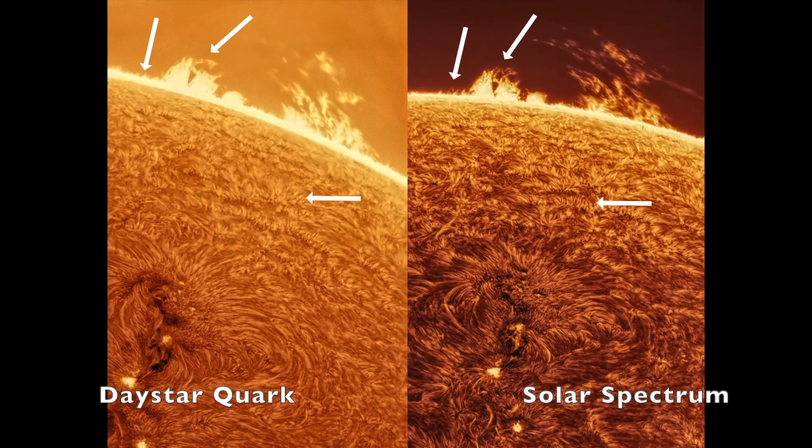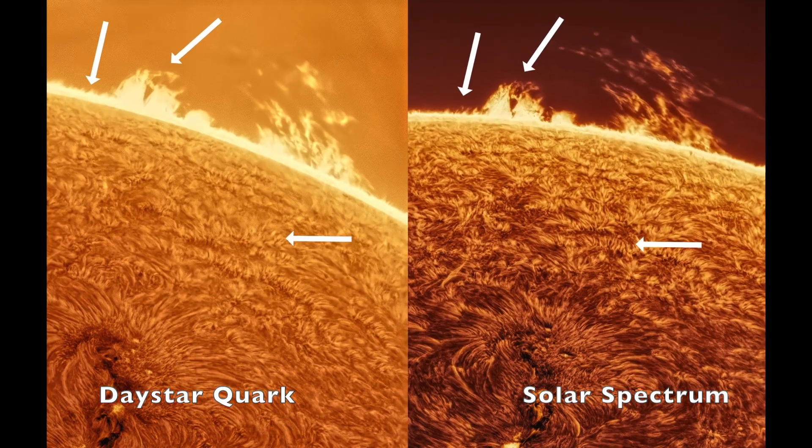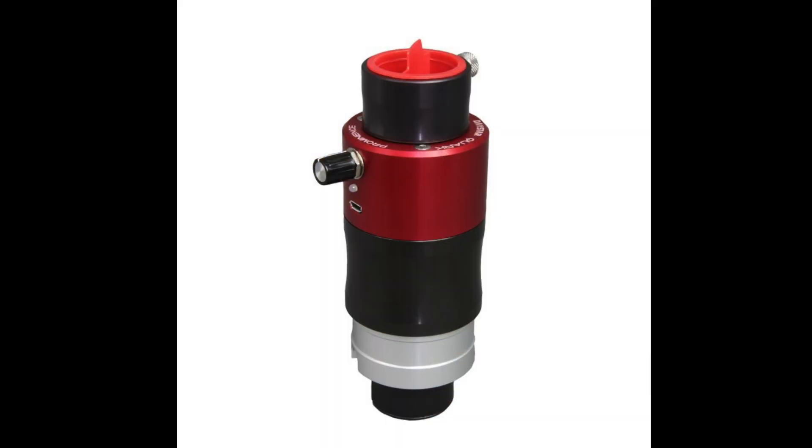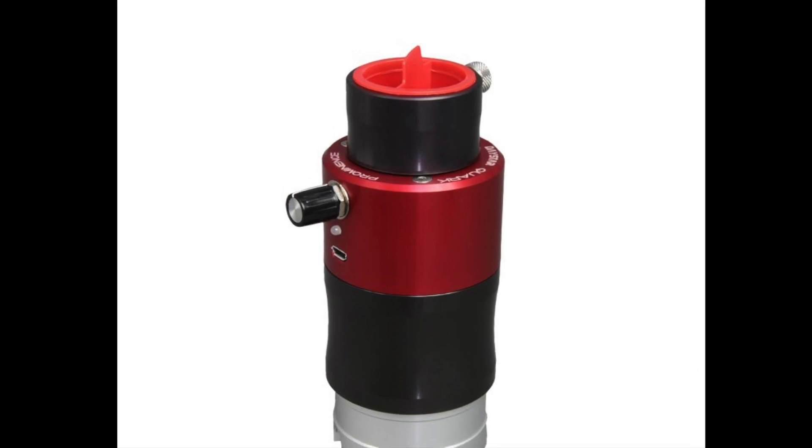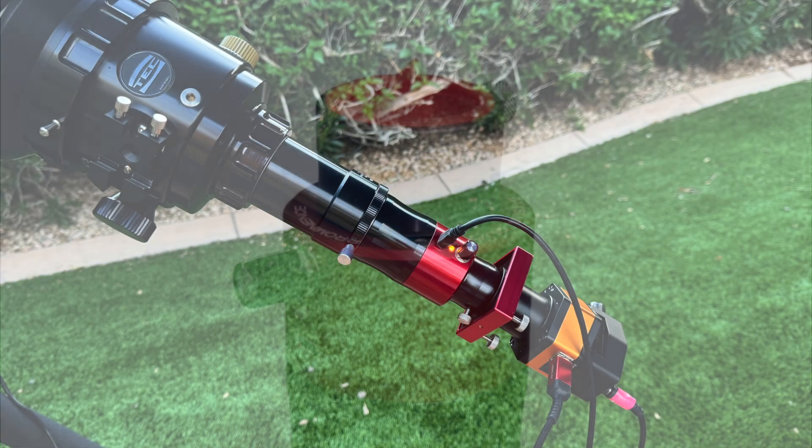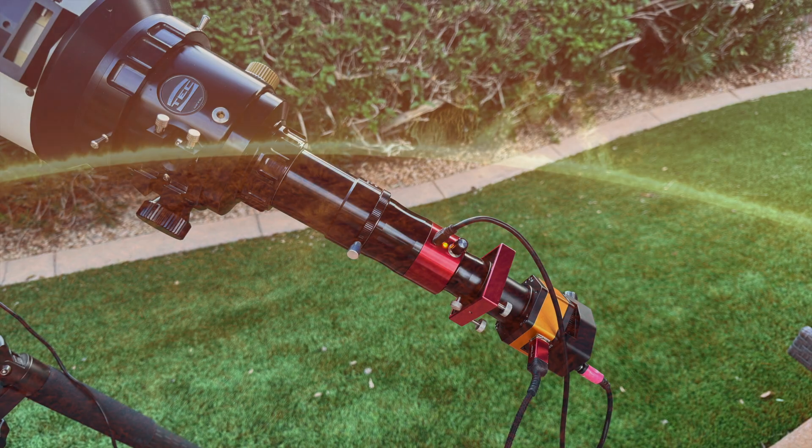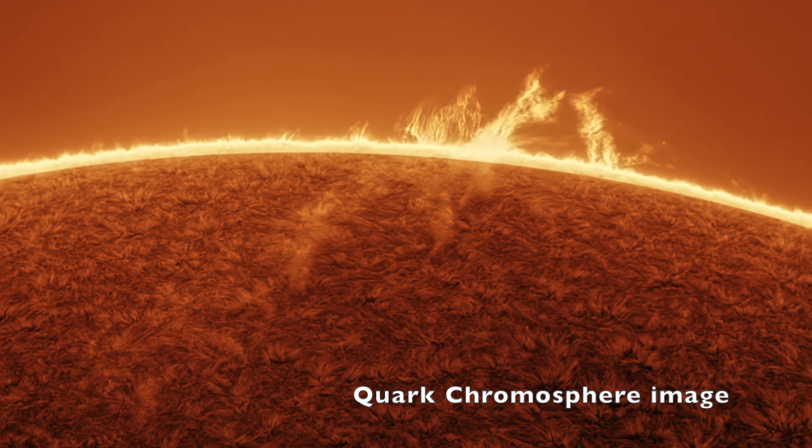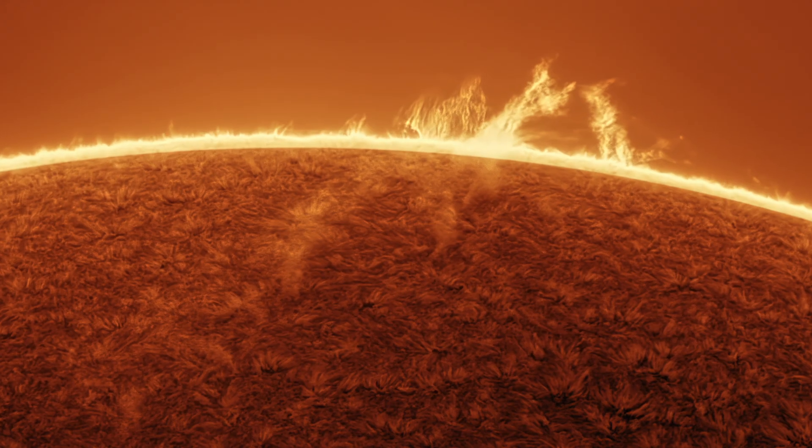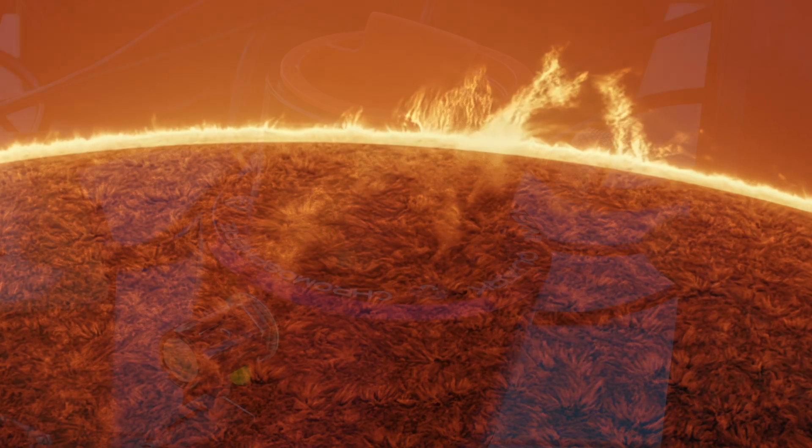The two main players in solid mica etalons are Daystar and Solar Spectrum. The Daystar Quark comes in two models, prominence or chromosphere. The prominence model is supposedly optimized for prominences with a wider bandpass and the chromosphere model a narrower bandpass for surface details. Yet my experience suggests, and most online reports agree, the chromosphere model does a fine job on prominences too. One friend of mine who owned a prominence model was very unhappy with its performance and he sold it, but others report satisfaction.